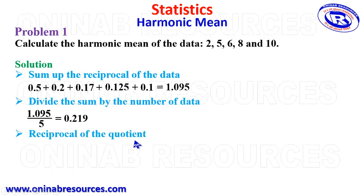The next step is to find the reciprocal of the quotient. Our quotient is 0.219, so that's going to be 1 divided by 0.219, which gives 4.57. Therefore, the harmonic mean is equal to 4.57. That's the end of solution to problem 1.